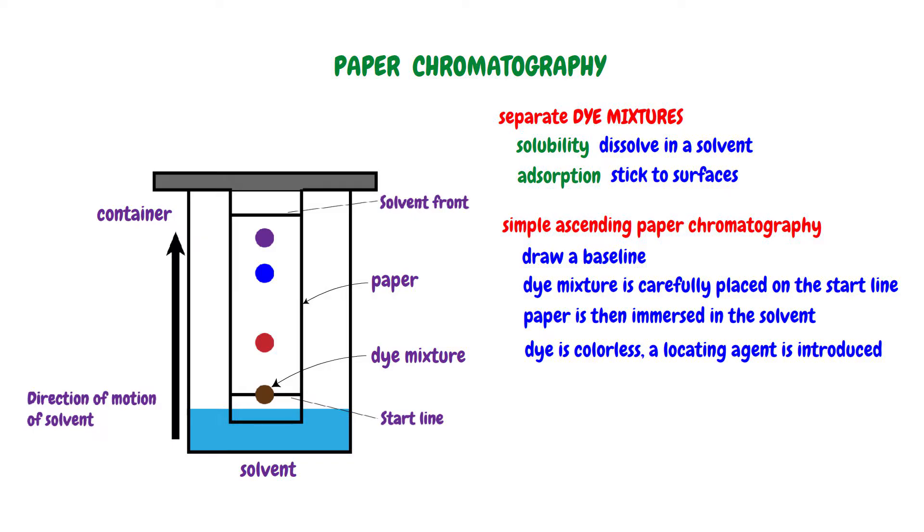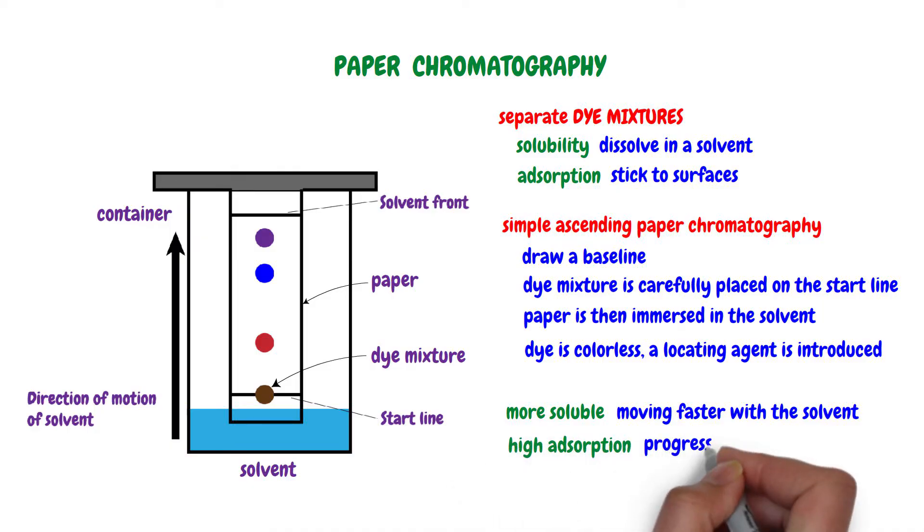As the solvent ascends through the paper, it carries the dye components, resulting in distinct colored spots. This phenomenon occurs because different substances in the dye exhibit varying solubility and adsorption characteristics. More soluble substances dissolve rapidly, moving faster with the solvent, while those with high adsorption tendencies stick to the paper, progressing more slowly.